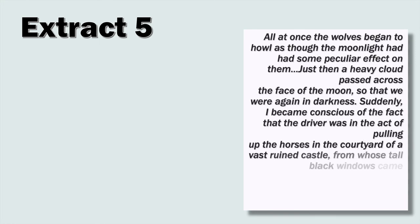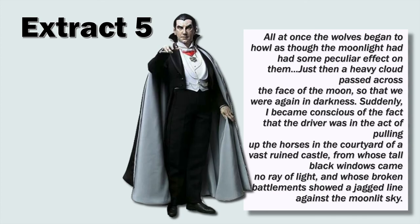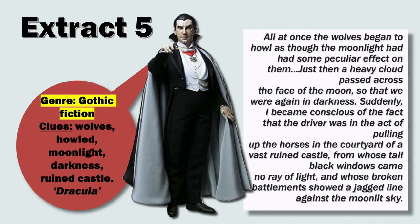Let's take a look at extract number five. All at once the wolves began to howl, as though the moonlight had had some peculiar effect on them. Just then, a heavy cloud passed across the face of the moon, so that we were again in darkness. Suddenly, I became conscious of the fact that the driver was in the act of pulling up the horses in the courtyard of a vast ruined castle, from whose tall black windows came no ray of light, and whose broken battlements showed a jagged line against the moonlit sky. That's Dracula! Yes, the genre here is gothic fiction. The clues: wolves, howling, moonlight, darkness, ruined castle. This is an extract from Bram Stoker's Dracula.